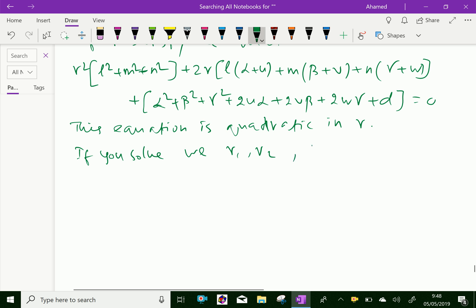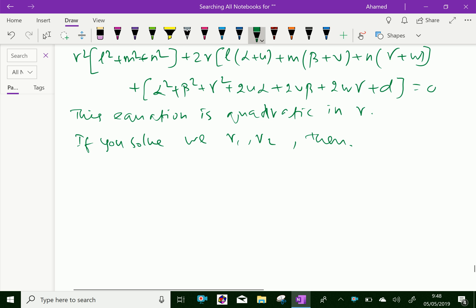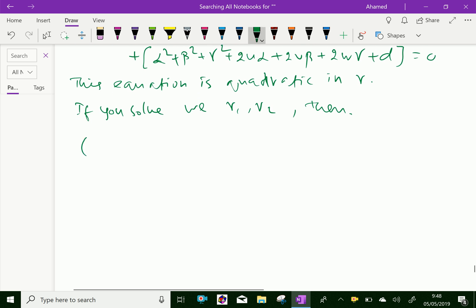Then, we can say (lr1 plus alpha, mr1 plus beta, nr1 plus gamma) and (lr2 plus alpha, mr2 plus beta, nr2 plus gamma) are the two points of intersection.